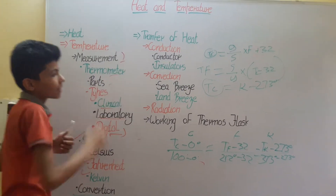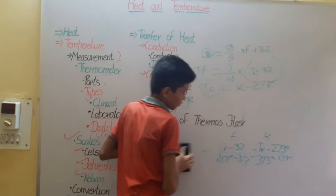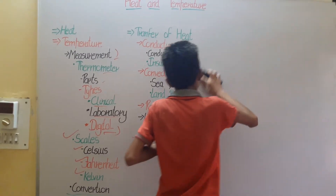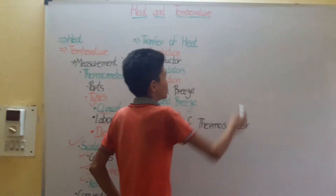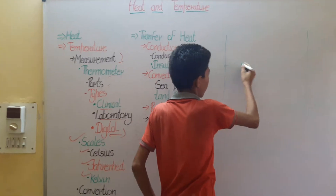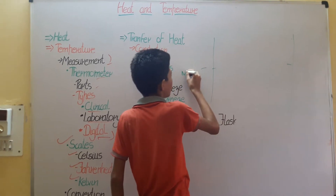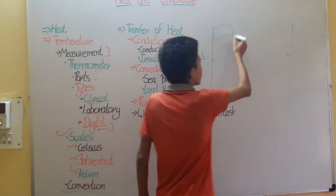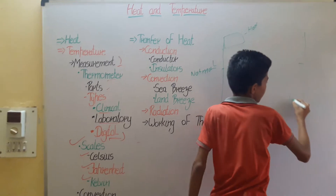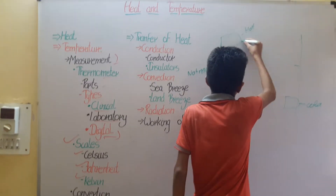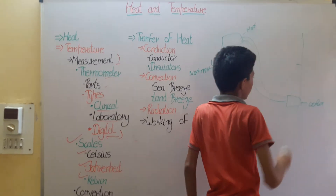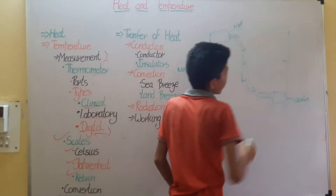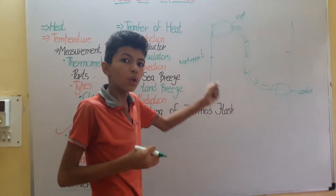Then we have the transfer of heat. If we take two bodies — one at a higher temperature (hot) and one at a lower temperature (cold) — and connect them, the heat will flow from the hotter region to the colder region. This proves that heat flows from a higher temperature to a lower temperature.